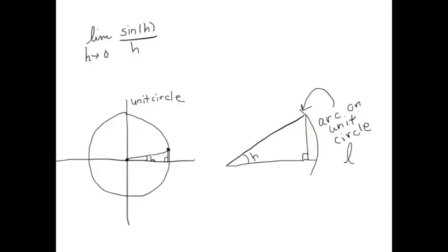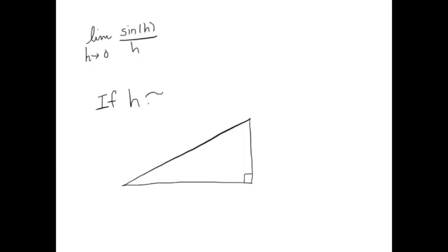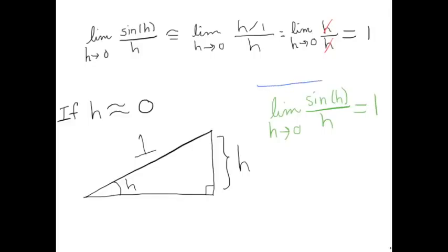Let's label the arc with l. l is just a fraction of the whole circle — whatever fraction l is over the circumference 2π equals the h angle over 2π total. This tells us that l is approximately equal to h. So if h is approximately equal to zero, the value of the angle will approximately equal the value of the vertical side (with hypotenuse 1 on the unit circle). Taking sine on this triangle gives opposite over hypotenuse, which is h over 1. The h's cancel, and our final answer is 1: the limit as h goes to zero of sin(h)/h equals 1.